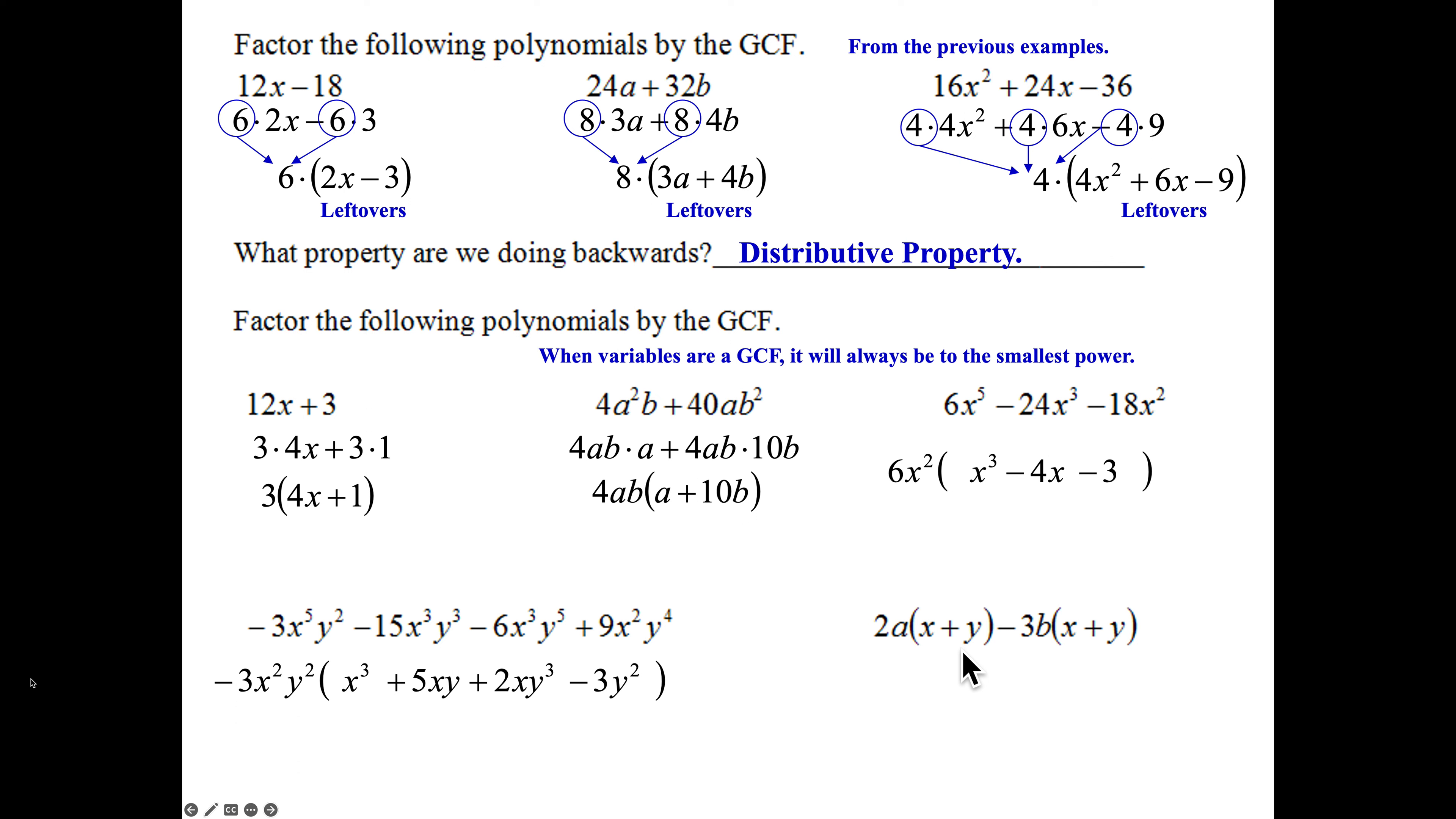You can also have a quantity be the GCF. Notice what's common between these two terms. Here's the first term. Here's the second. The x plus y in parentheses is my GCF. I divide them out. I'm left with 2a minus 3b.